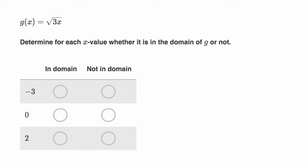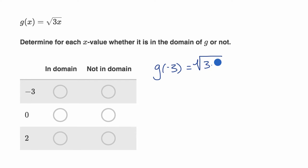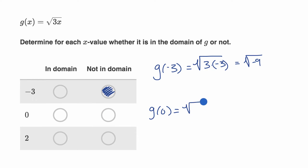Determine for each x value whether it is in the domain of g or not. First, when x equals negative three, do we get a legitimate g of x? Well g of negative three is going to be the square root of three times negative three, which is equal to the square root of negative nine. With just a principal square root like this, we don't know how to evaluate this, so this is not in the domain. What about when x equals zero? g of zero equals the square root of three times zero, which is the square root of zero, which equals zero — a legitimate result, so that is in the domain.